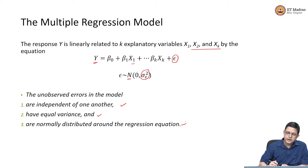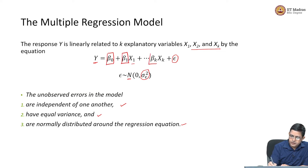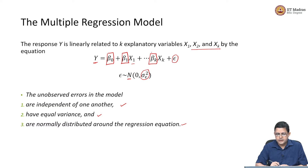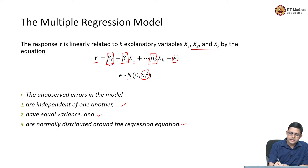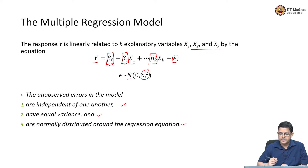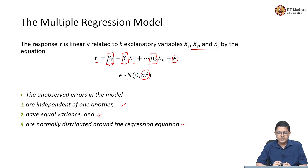The question becomes estimation of the beta variables — beta naught, beta 1, all the way to beta k. There are k+1 betas to be estimated. We are only going to have a sample of values for x1, x2, x3 through xk as well as y, and from this sample of data we estimate these parameters beta naught, beta 1, beta 2, beta 3, all the way to beta k. This is the multiple regression model.